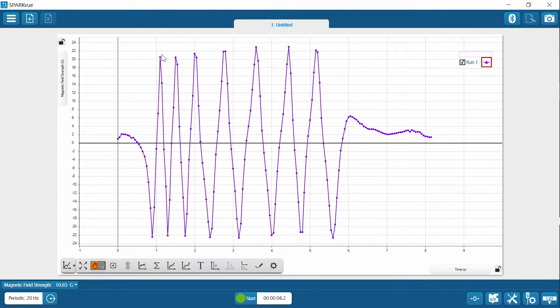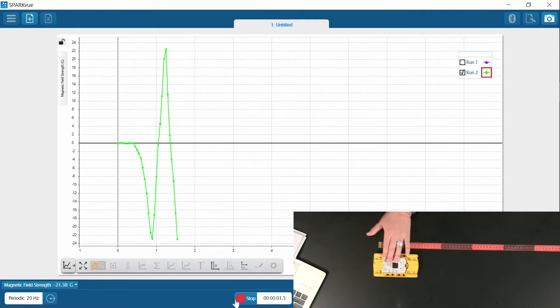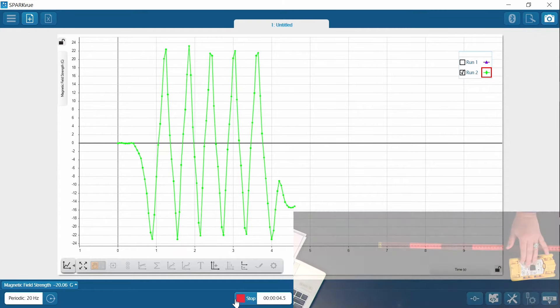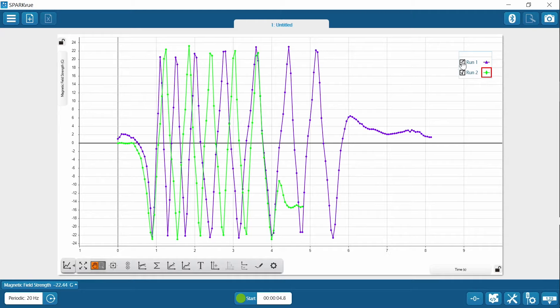Let me show you why it's important to always start at that zero Gauss again, because you want to try and replicate your data as close as possible. I'm almost there. And start again. And let's put one run over the other so you can see. That's why it's really important that you try and start as close to zero Gauss every time you can.